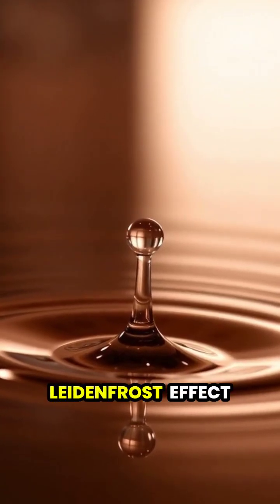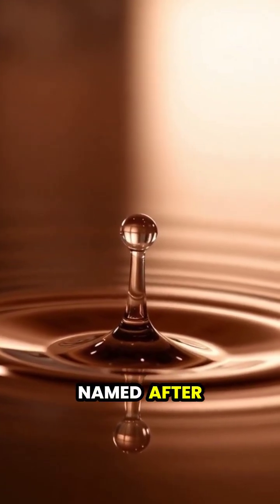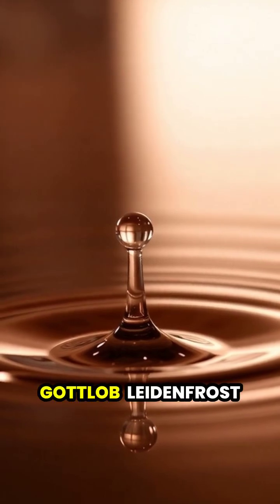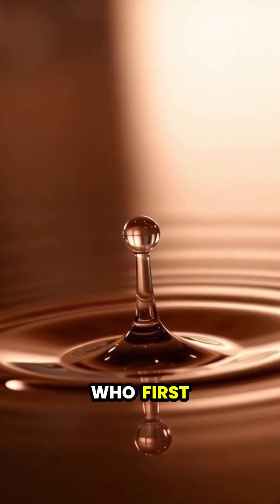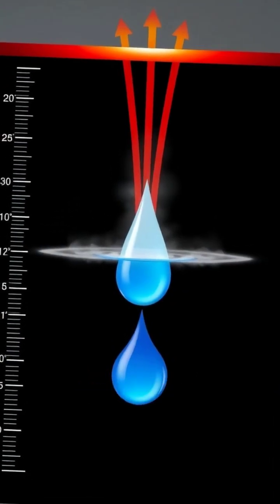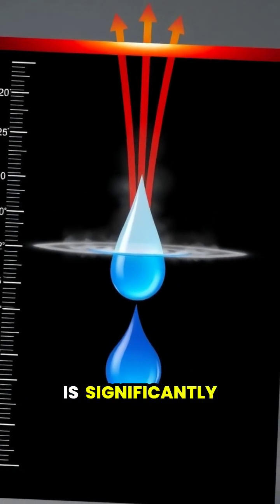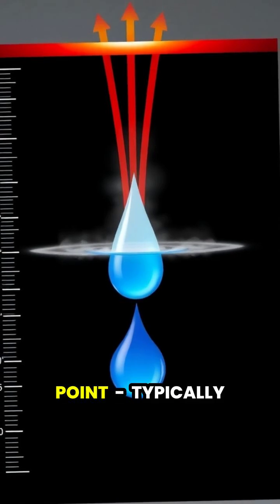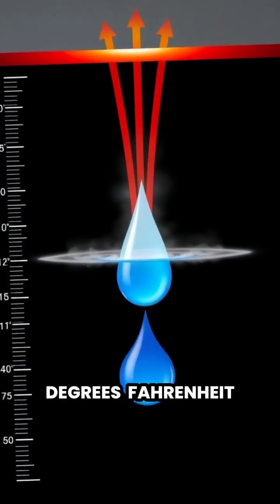Scientists call this the Leidenfrost effect, named after the German doctor Johann Gottlob Leidenfrost who first described it in 1756. The effect only occurs when the surface temperature is significantly hotter than water's boiling point, typically above 400 degrees Fahrenheit.